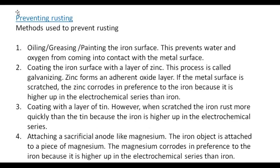How do we prevent rusting? We can basically use oiling, greasing, and painting the iron surface. This prevents water and oxygen from coming into contact with the metal surface.